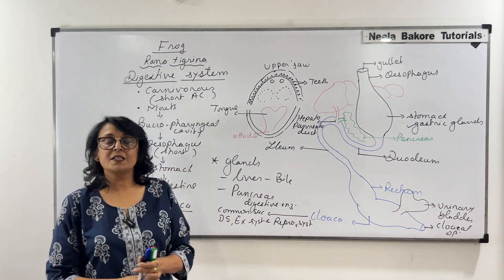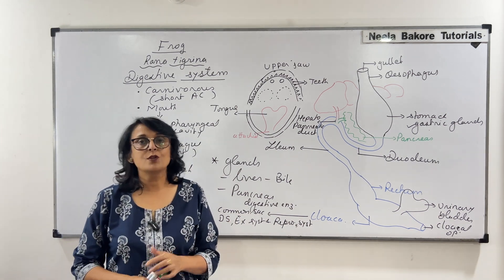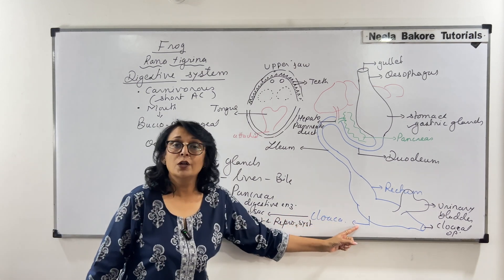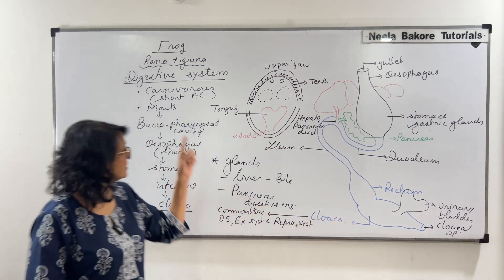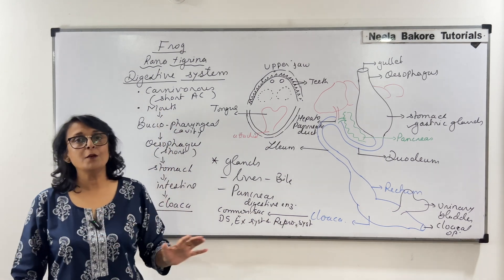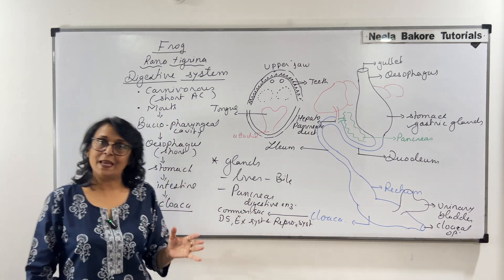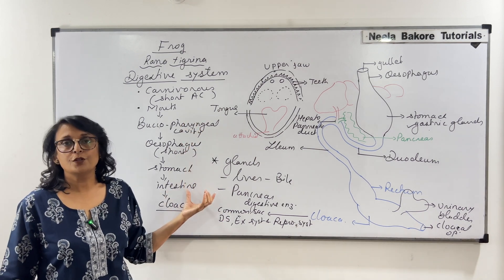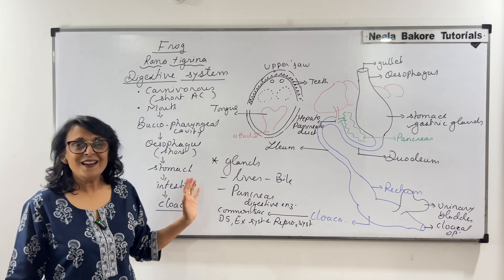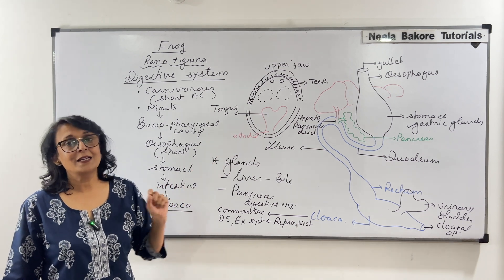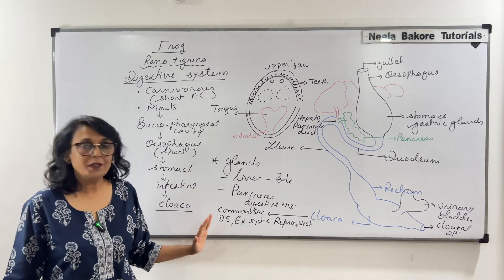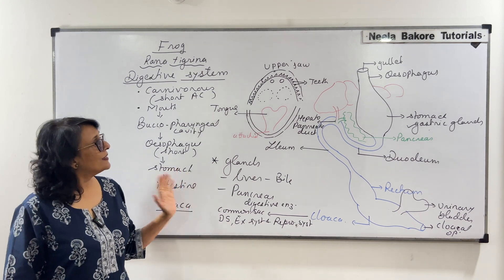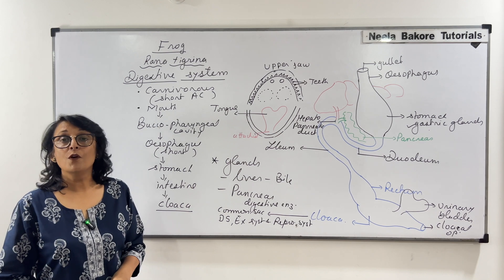When we talk of the excretory system and reproductive system, we will also see that ultimately everything gets poured into the cloaca. This is the digestive system of frogs — a very well-developed system, pretty much the same as that of humans, but because of its mode of nutrition it is slightly different, and there are some special structures found in amphibians which we have to remember.